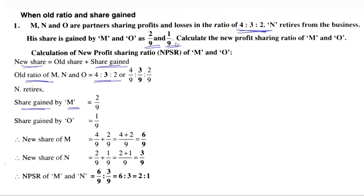The share gained by O is 1/9. Now we substitute into the formula for each partner separately. To find the new share of M, we write: Old Share of M + Share Gained by M = 4/9 + 2/9. The remaining part is just calculation. Since the denominators are the same, we can combine the numerators directly.